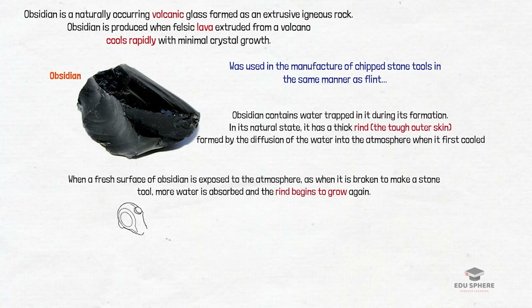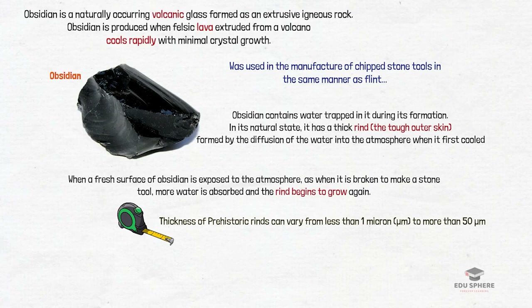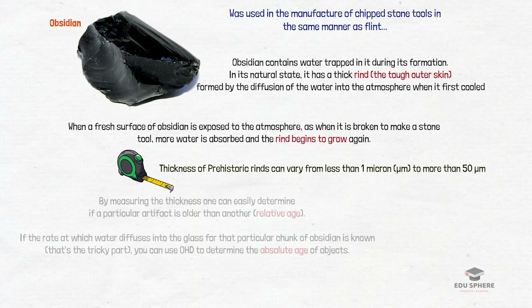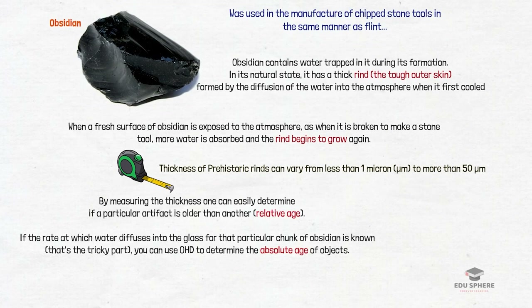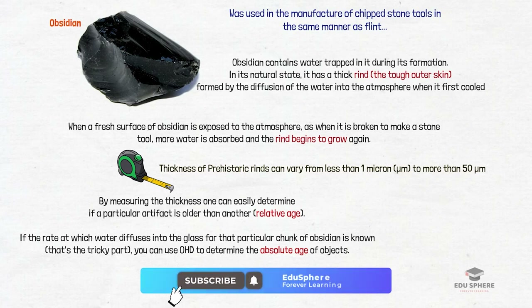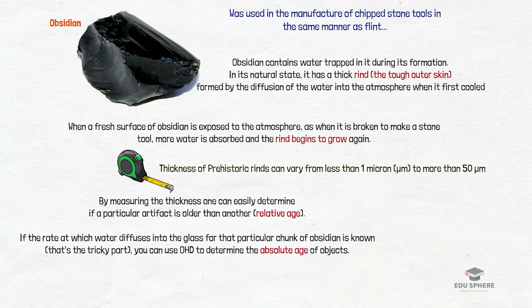Prehistoric rinds can vary from 1 micron to more than 50 microns in thickness depending on the length of time of exposure. By measuring and comparing the thickness of two rinds, one can easily determine if a particular artifact is older or younger than another, making it useful for relative dating. If the rate at which water diffuses into the glass for that particular chunk of obsidian is known, you can use obsidian hydration dating to determine the absolute age of objects.